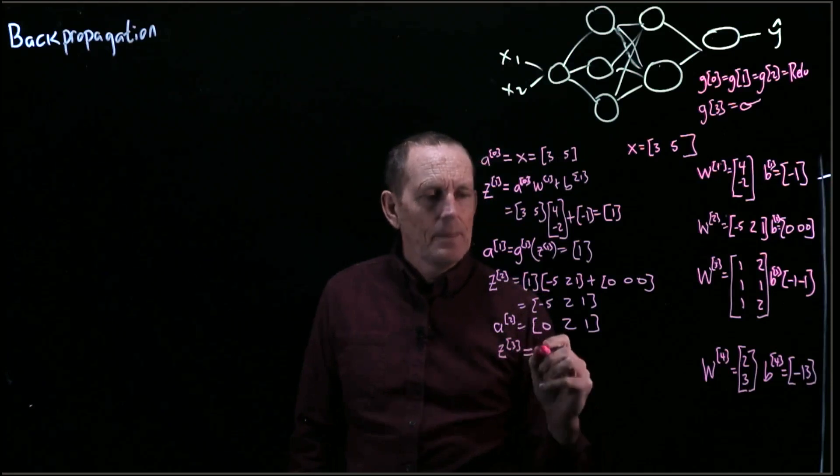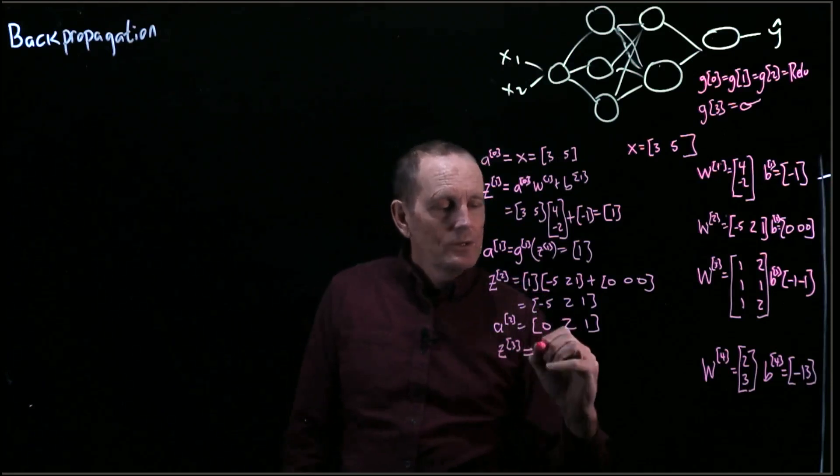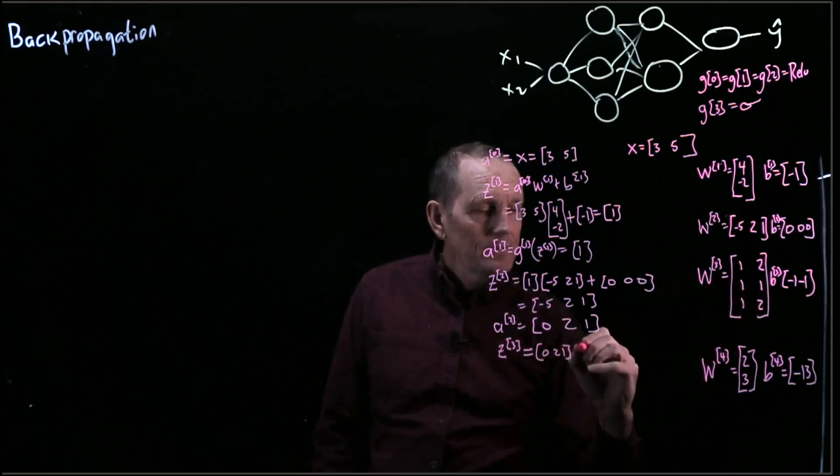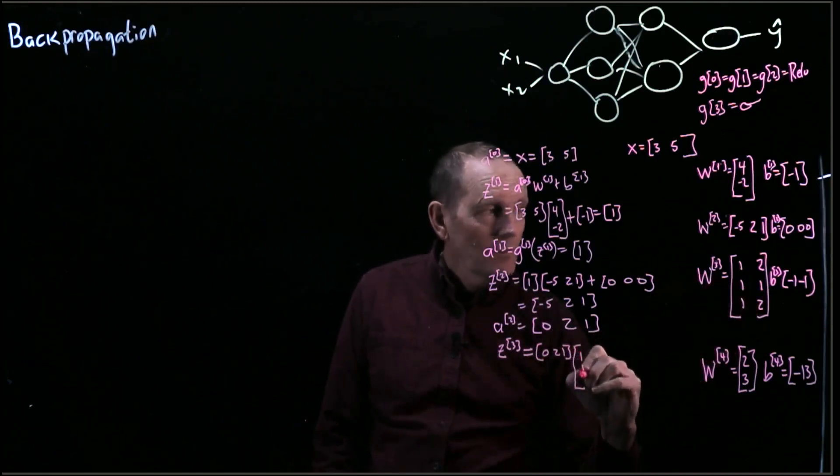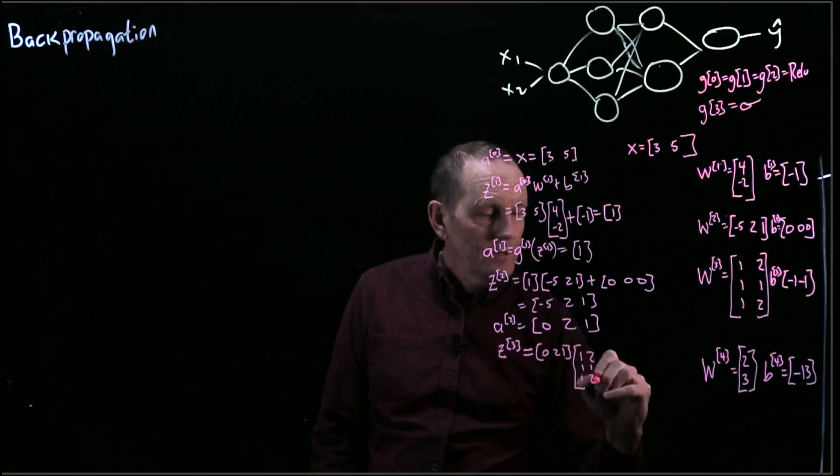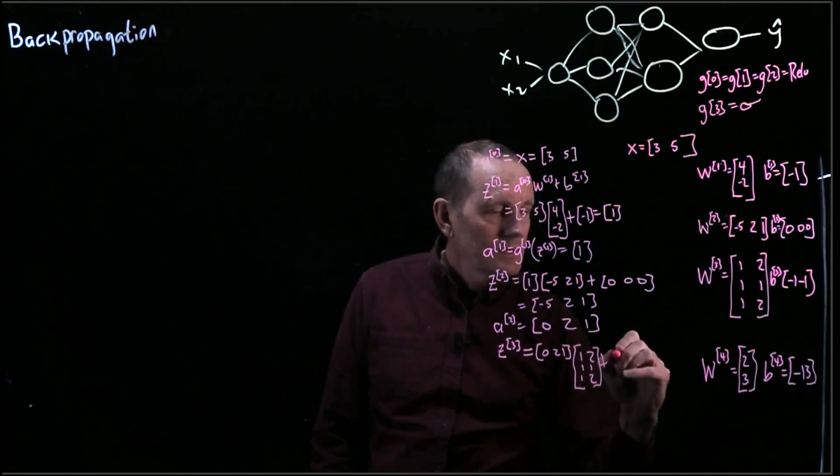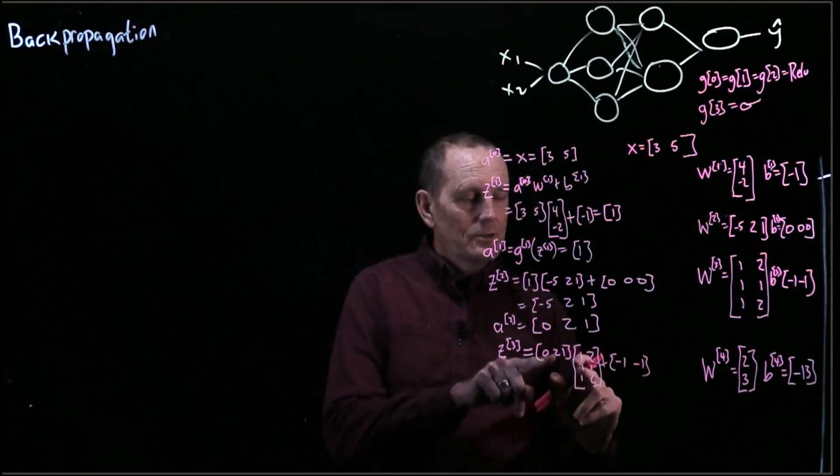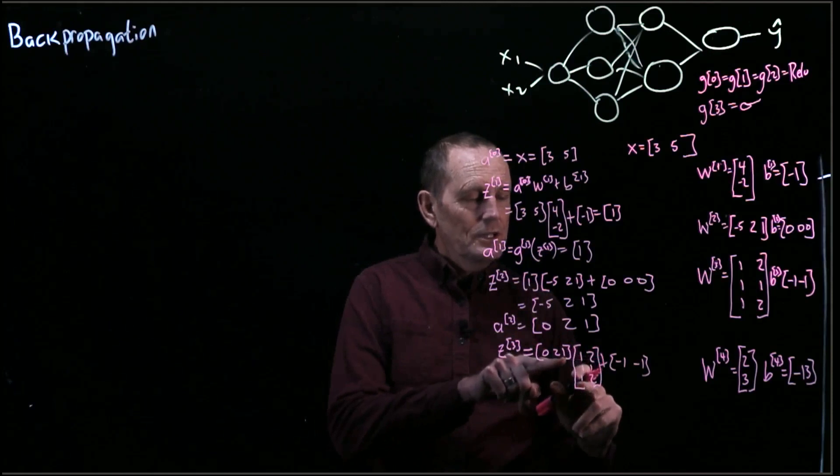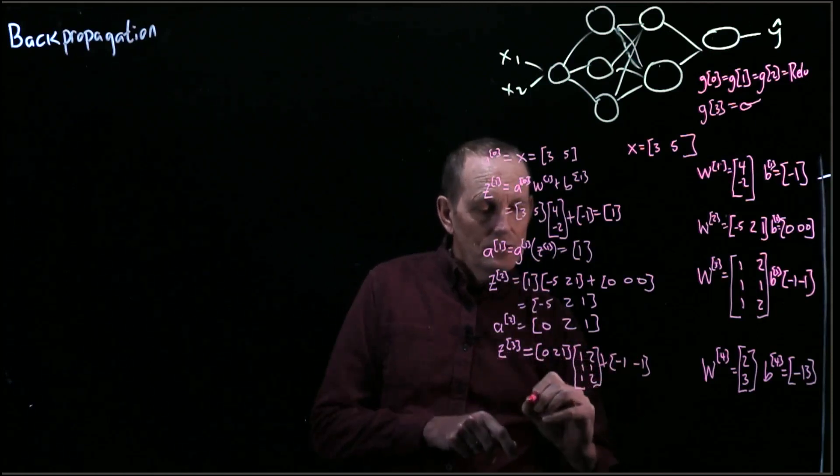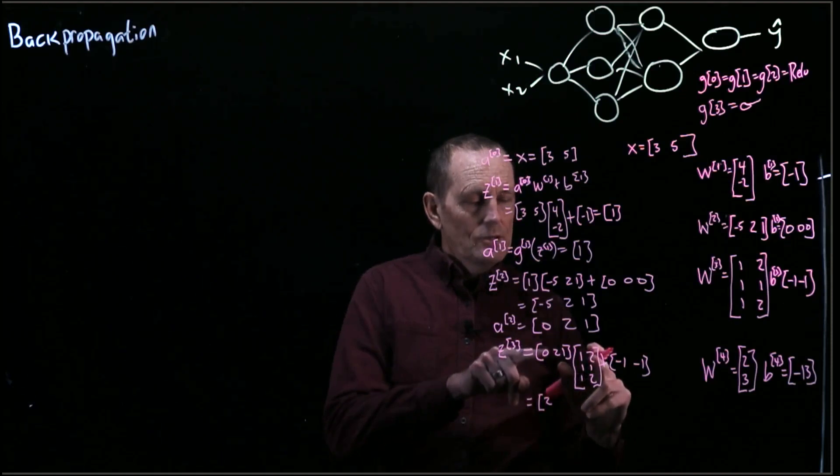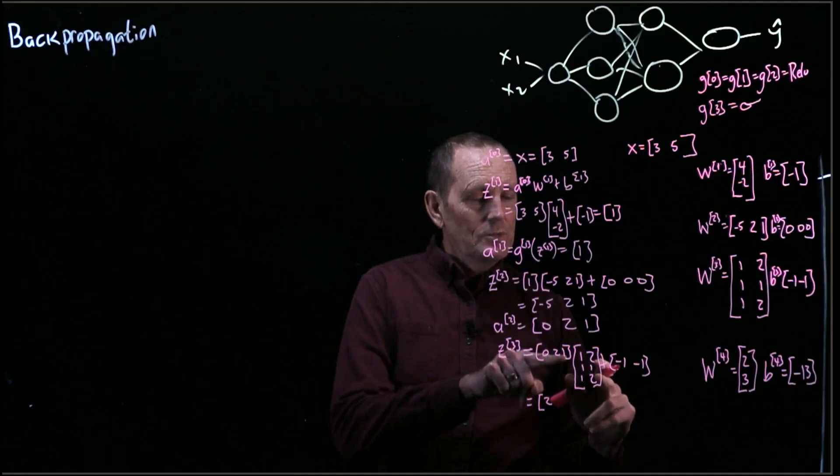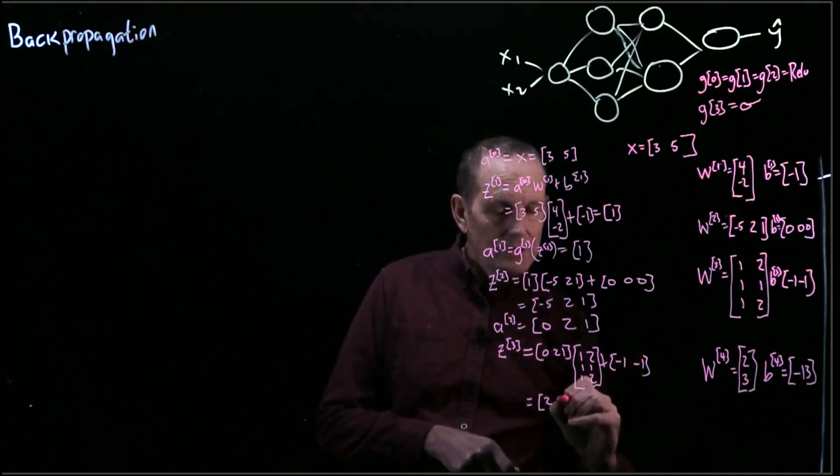Z at 3 equals, so 0, 2, 1, times this array here, 1, 1, 1, 2, 1, 2, plus negative 1, negative 1. So that's equal 0, 2, plus 1 is 3, plus negative 1 is 2, and then 0 times 2 is 0, 2 times 1 is 2, 1 times 2 is 2, so that's 4 plus negative 1 is 3.